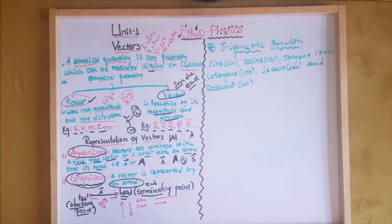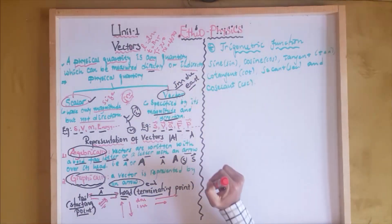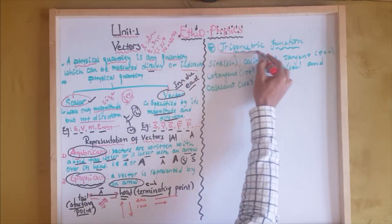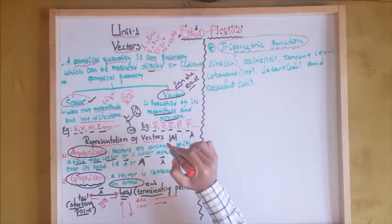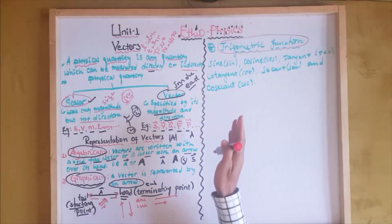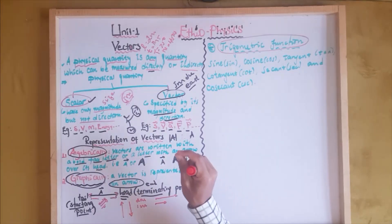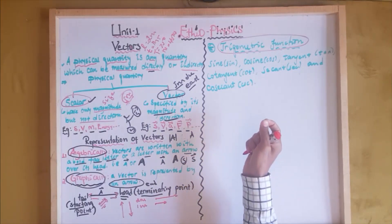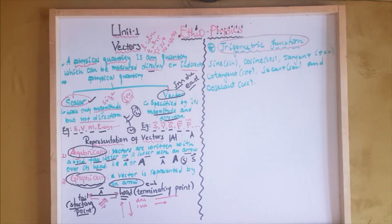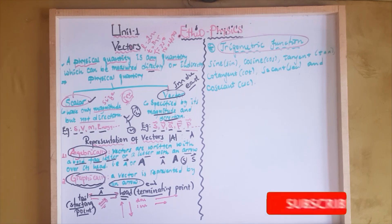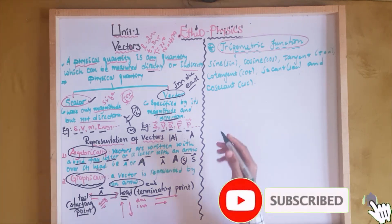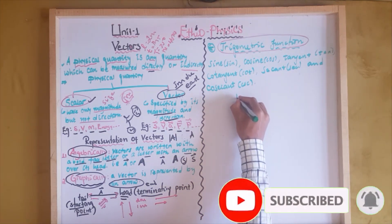Trigonometric functions are a part of mathematics that studies the relation between the sides of a triangle and their interior angles. We need to consider a right angle triangle for trigonometry.